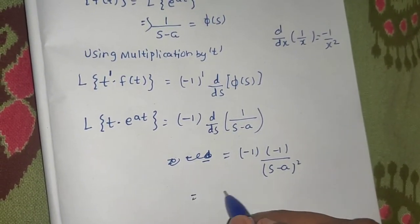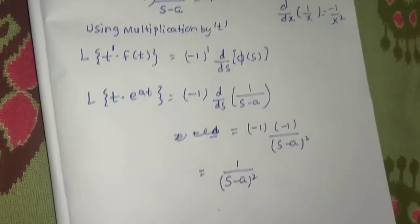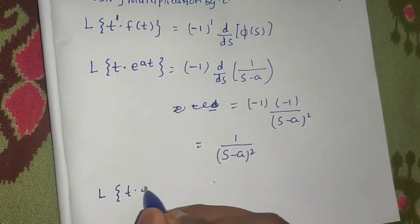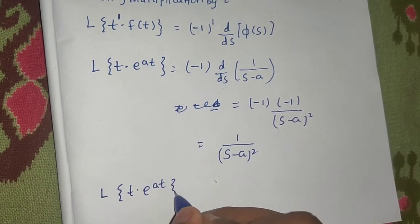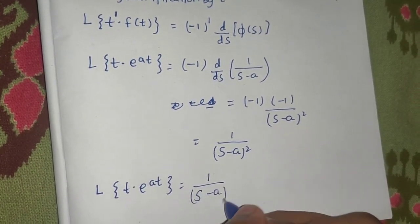Minus minus plus you are getting the final answer as 1 upon s minus a the whole square. So, the Laplace of t e power at is nothing but 1 upon s minus a the whole square.